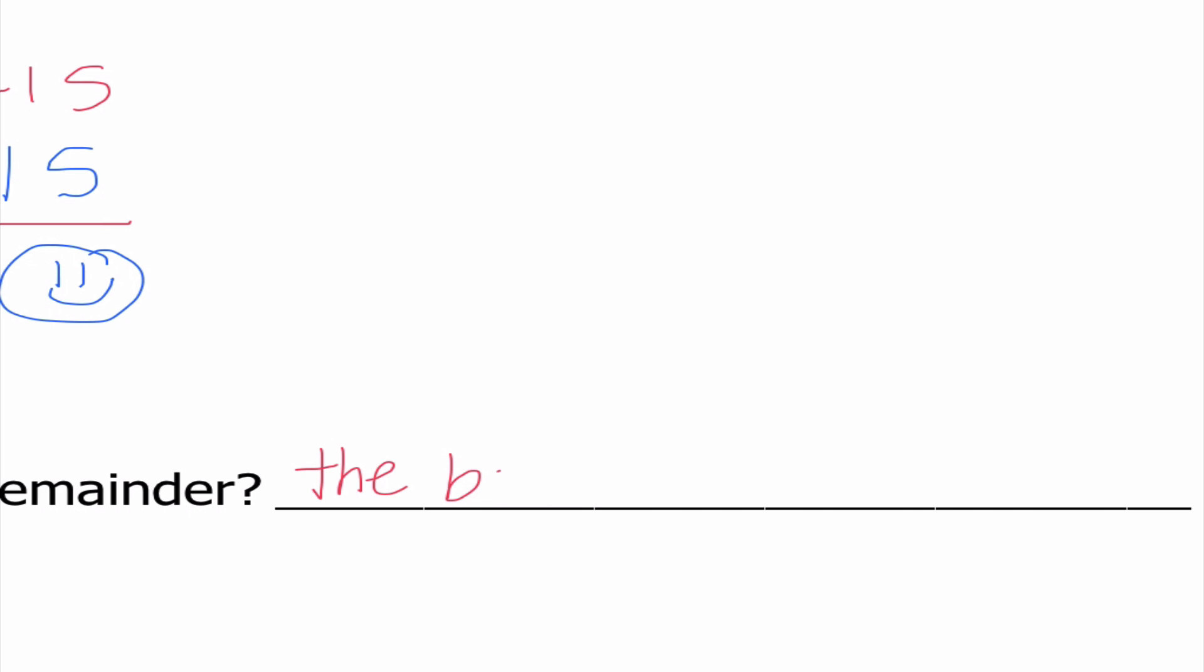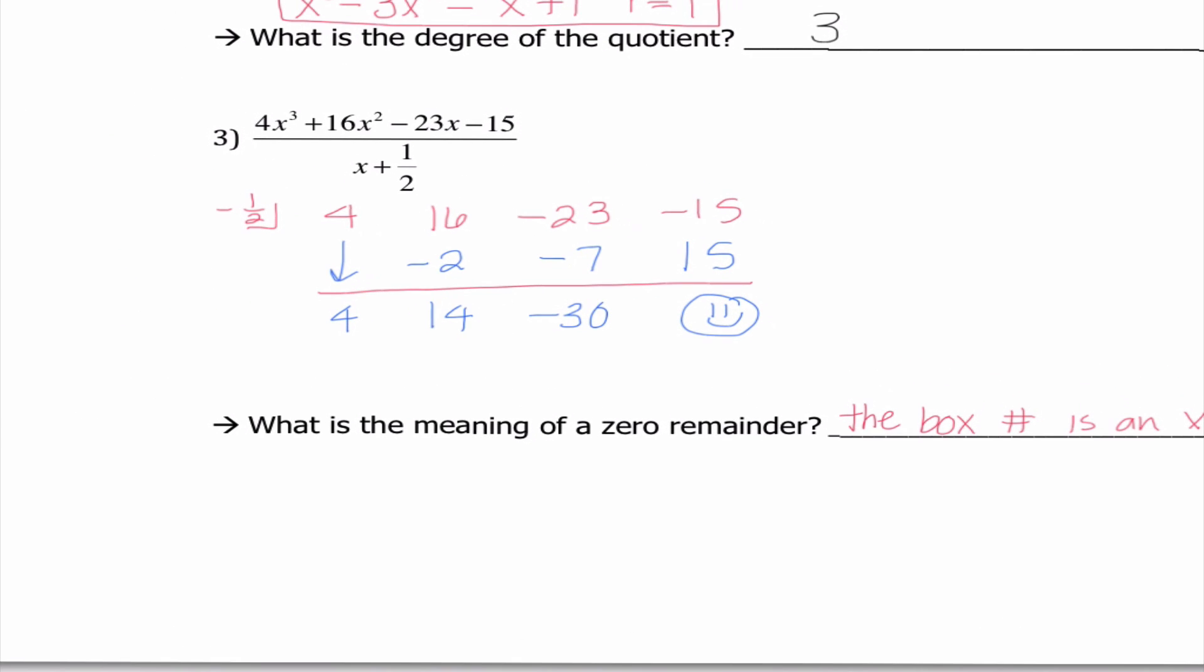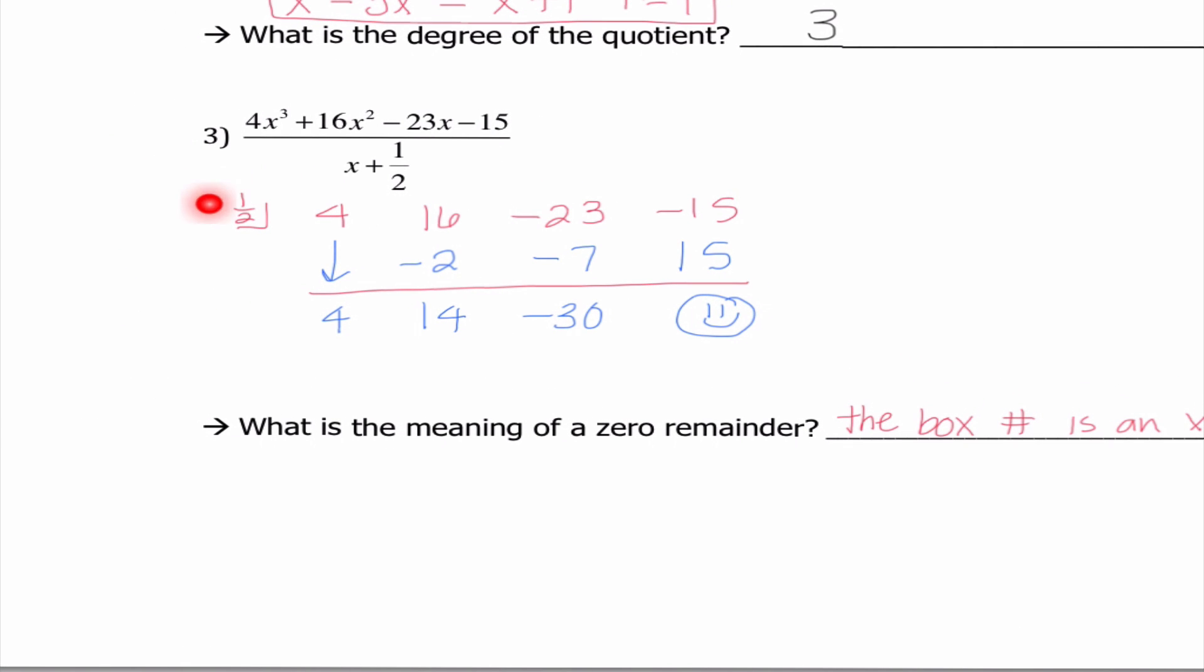And I'm going to jump into answering this question. What is the meaning of a 0 remainder? That's telling us that the box number is an x-intercept. So it's telling me in this case that negative 1 half is an x-intercept. So negative 1 half 0 would be an ordered pair on this function.